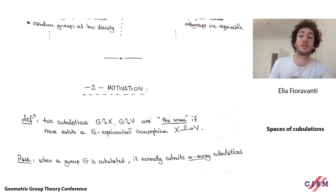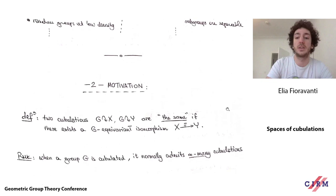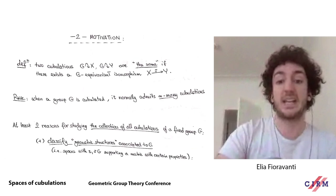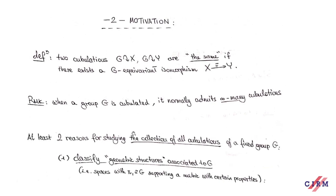For instance, for hyperbolic 3-manifold groups in general, it could be that all cubulations have really high dimension — this is not well understood. It is certainly known that some hyperbolic 3-manifold groups will not have any cubulations of dimension 3. This is a delicate thing, and we don't really understand the space of cubulations for any group, so it is an interesting thing to study. But let me give you two more concrete reasons for studying it. At this stage I should say: this is just a set, I haven't put any additional structure on it yet.